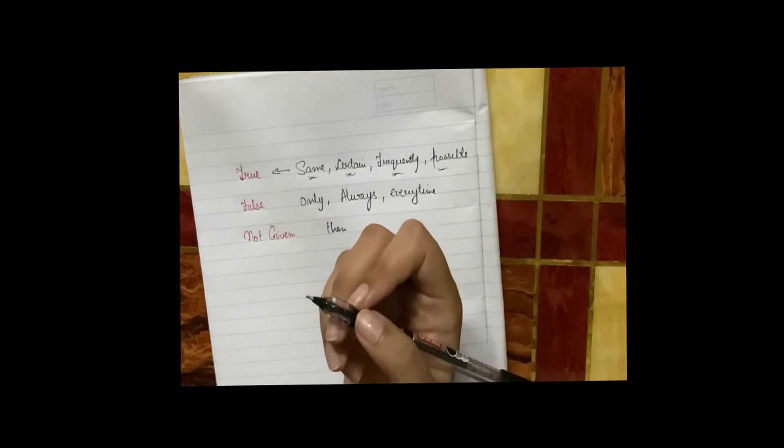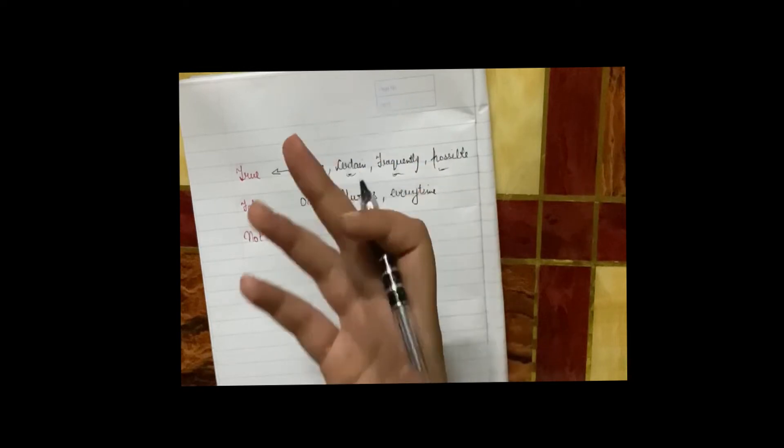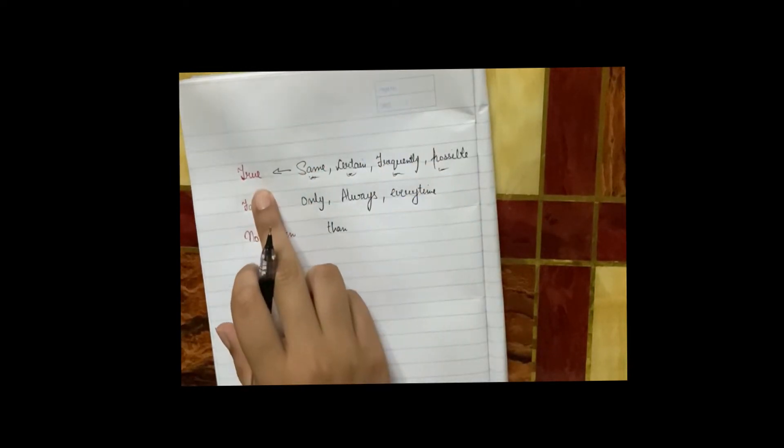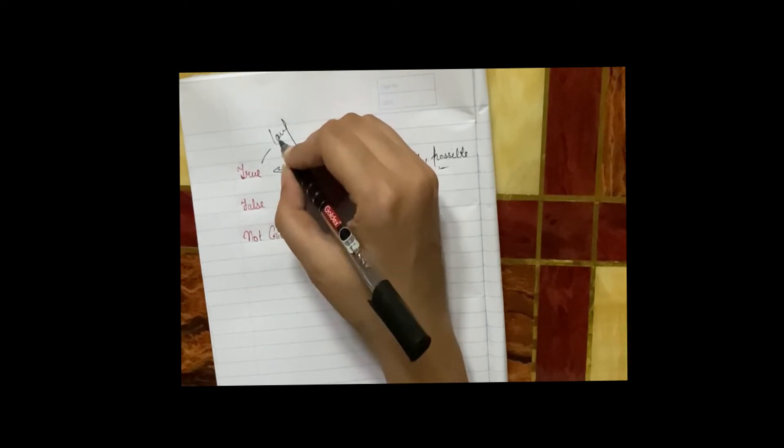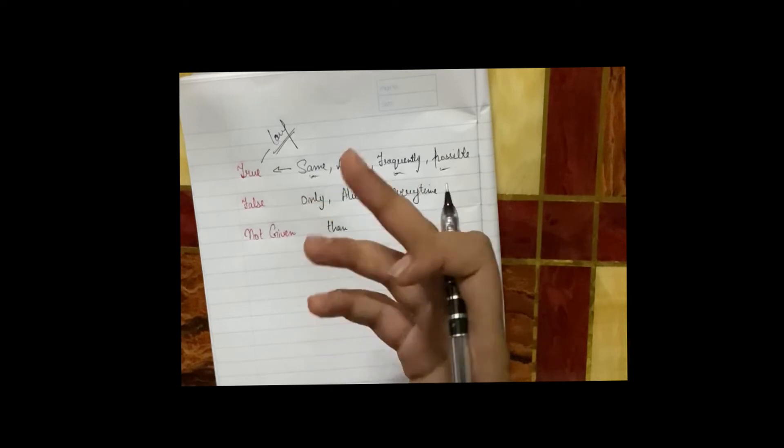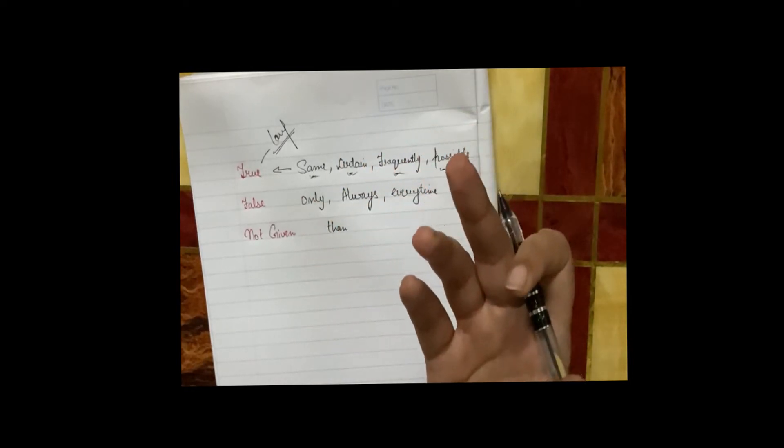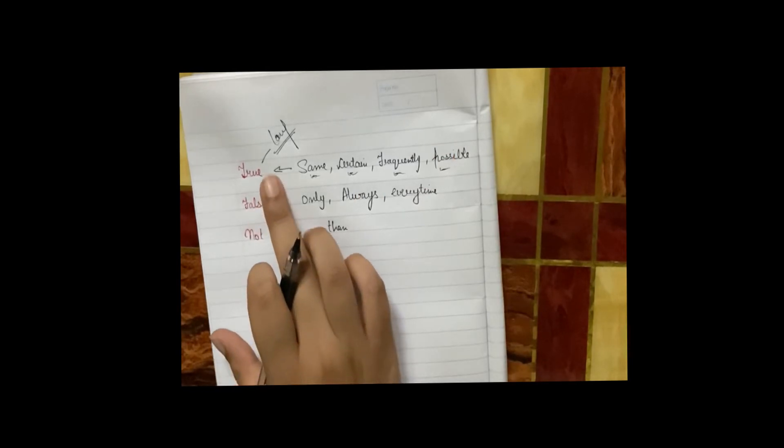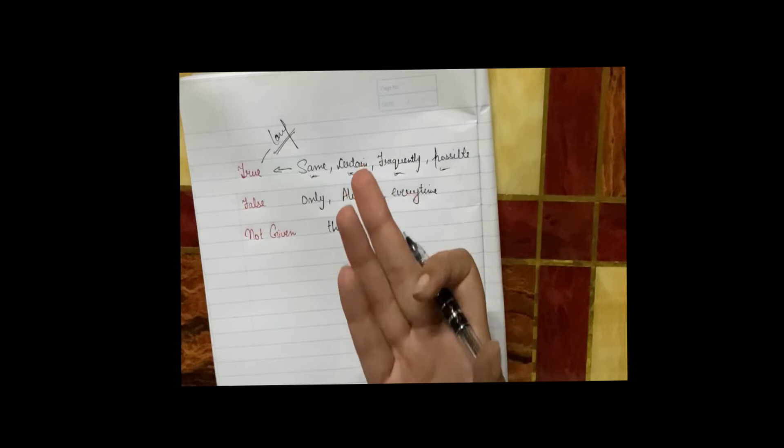And also we can judge it by one more thing: by the length of the sentence, length of the question. What happens in true? Mostly the length of the question is long. It is a little long sentence. This could also help you to guess if the answer is true or not. So if you have a long sentence, then your answer is true.